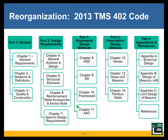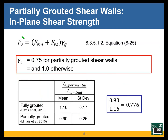We have our engineering design methods. We're focusing on chapter 8, allowable stress design, and prescriptive design methods, then some references and appendices. If you're used to 2011, ASD was in chapter 2, and if you just replace 2 with 8, essentially everything remains roughly the same in allowable stress design.